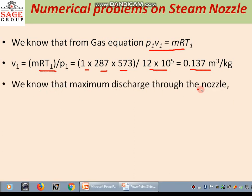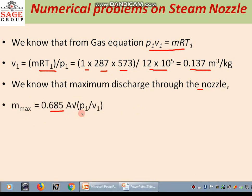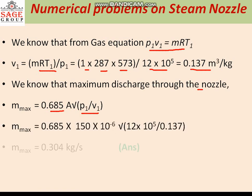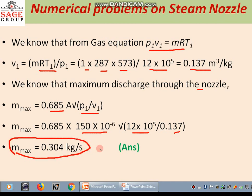The maximum discharge through the nozzle is given by the relation: M_max equal to 0.685 A square root of P1 by V1. Putting the values, M_max equal to 0.685 into A (150 into 10 to the power minus 6), P1 is 12 into 10 to the power 5, and V1 is 0.137. On solving, we get the maximum mass flow rate M_max equal to 0.304 kg per second. This is the answer.